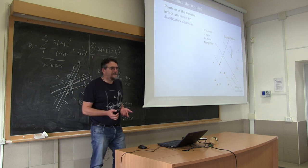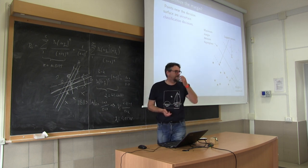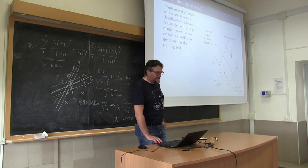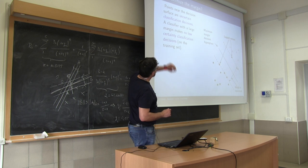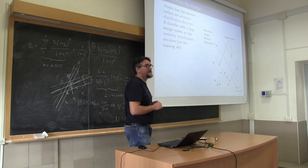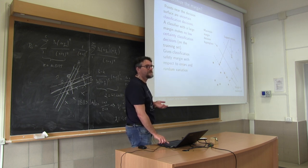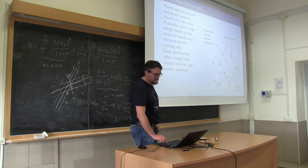As much data you see, the better the result of the classifier — that's a general rule. But what is interesting is that, irrespectively from the dataset, a classifier with a large margin makes no low-certainty classification decision. Why? Because the distance is very high between the two classes. The purpose is to find the hyperplane, the decision boundary, that will maximize this area.